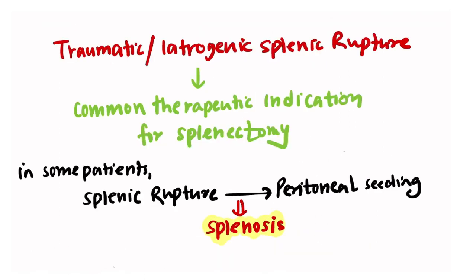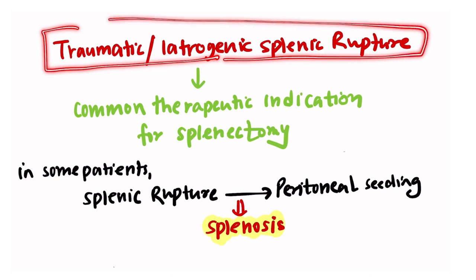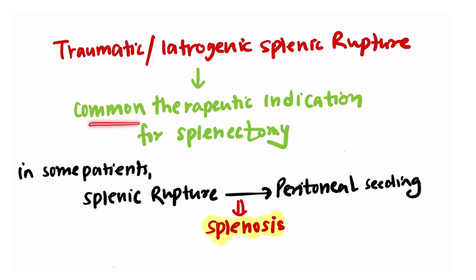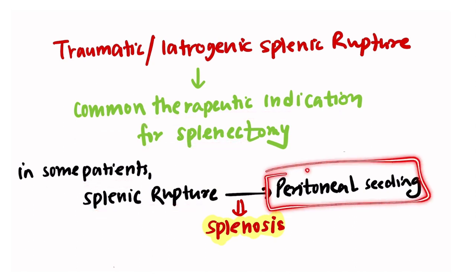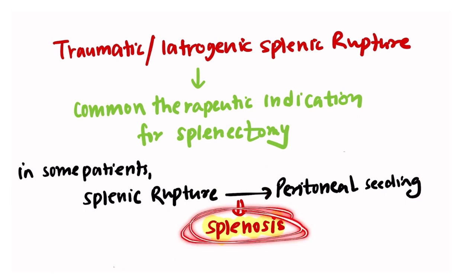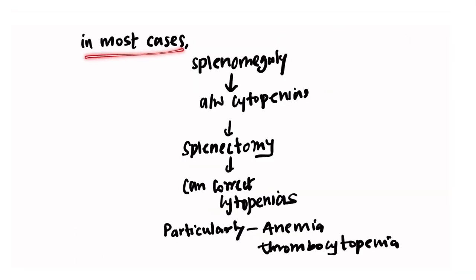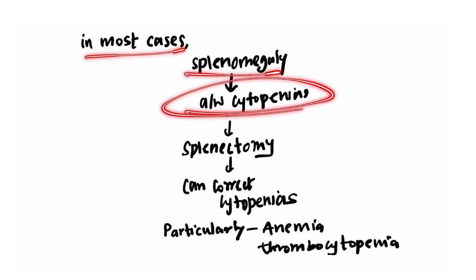Traumatic or iatrogenic splenic rupture is an important and common therapeutic indication for splenectomy. In some patients, splenic rupture may lead to peritoneal seeding, known as splenosis. The spleen tissue in the peritoneal cavity does not have supply from the portal circulation, and this spleen tissue may cause pain and GI obstruction.